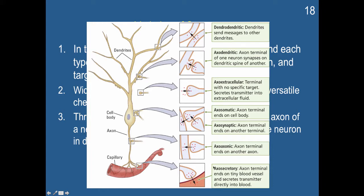Then you have this axosecretory. The axon terminal ends on tiny blood vessels and secretes the transmitters directly into blood. This is often what happens with hormones, that these transmitters are secreted into the bloodstream for them to travel throughout the body and have very widespread effects on function.